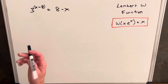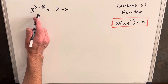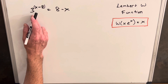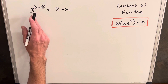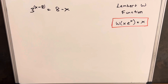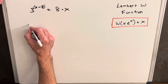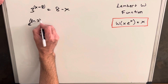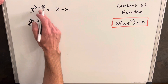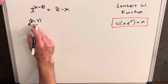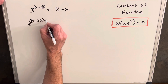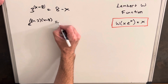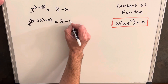The problem here is we don't have an e in the problem — we have base 3. But there's an easy way to handle that: we can always turn base 3 into e by writing 3 as e^(ln 3). So this 3 raised to x minus 8 becomes e^(ln 3 · (x minus 8)), equals 8 minus x.